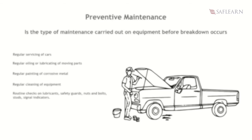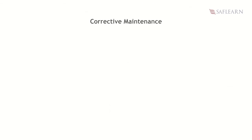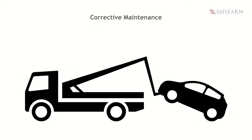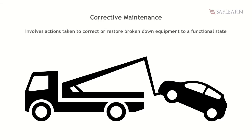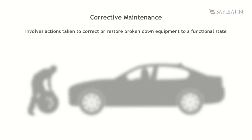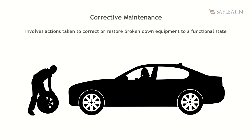Both predictive and preventive maintenance are done before a machine or equipment breaks down. On the contrary, corrective maintenance involves actions taken to correct or restore broken down equipment to a functional state. The equipment may need a total overhaul and some parts may need to be replaced or repaired. Corrective maintenance requires a lot of money and time.